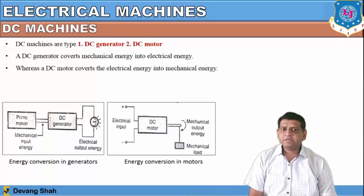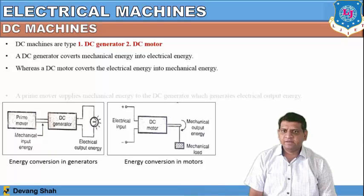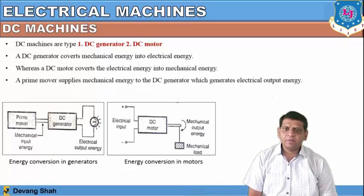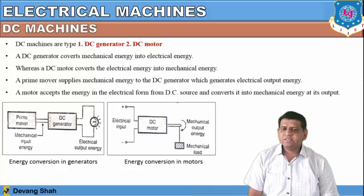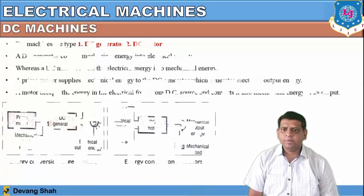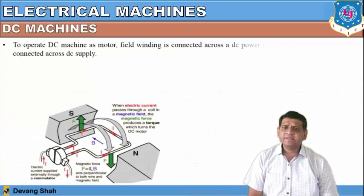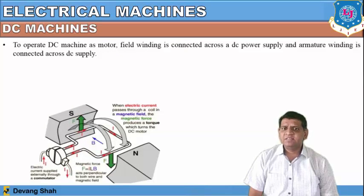Whereas the DC motor converts electrical energy into mechanical energy. Electrical energy is applied to the DC motor and that is converted into mechanical energy. The prime movers are used to generate DC energy. The motor accepts energy in electrical form from a DC source and converts it into a mechanical energy output. So, a DC generator takes input as mechanical and converts to electrical; a DC motor takes input as electrical and converts to mechanical.